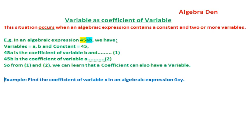Another example: find the coefficient of variable x in an algebraic expression 4xy. Answer: 4y is the coefficient of variable x and contains constant 4 and variable y.